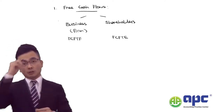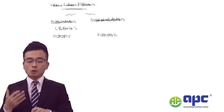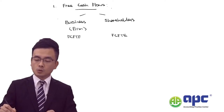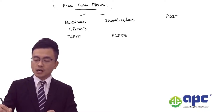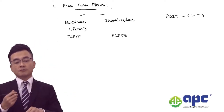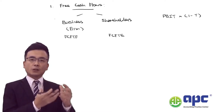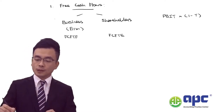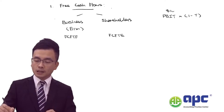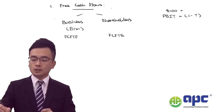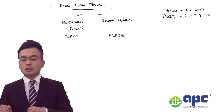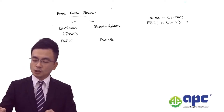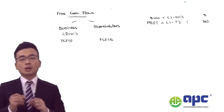I always start with the profit before interest and tax (PBIT) and multiply by one minus the tax rate. In order to arrive at PBIT, we need sales revenue and all other costs deducted from sales revenue. Let's say $100 for the PBIT with the tax rate being 20%, so that gives us $80.